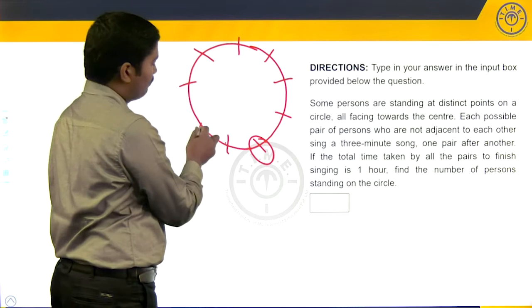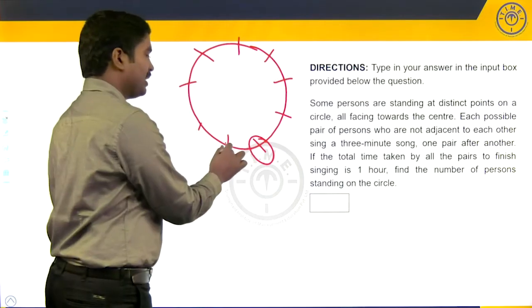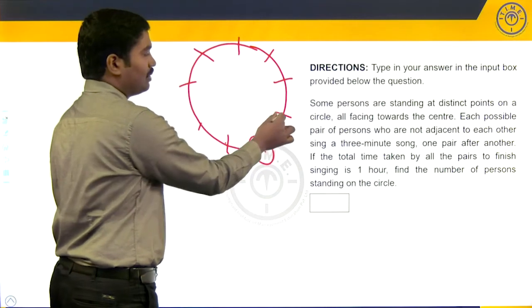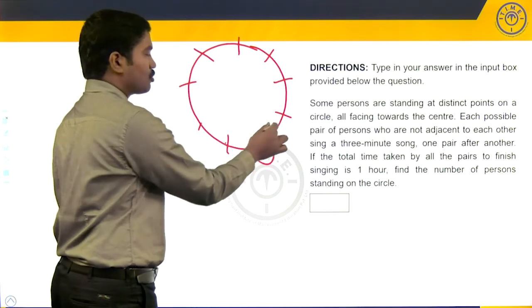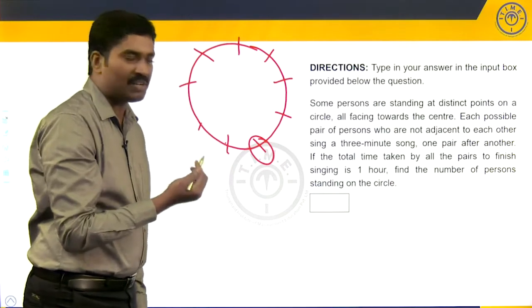But he can pick his pair from here, here, here, here, here or here. Which means himself excluded, immediate neighbors, two of them excluded. Apart from these three people, I can choose the remaining people in as many ways.